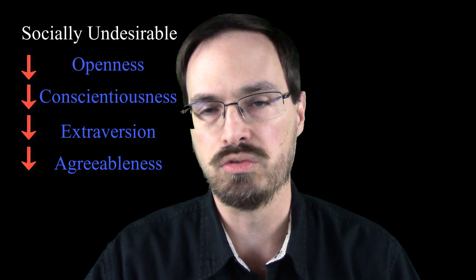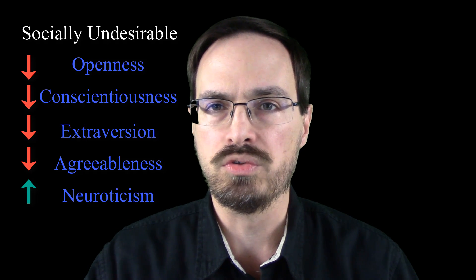The socially undesirable profile would be low scores in openness, conscientiousness, extroversion, and agreeableness, and a high score in neuroticism. A lot of the research literature really pays attention to that socially undesirable personality profile, and there's not a lot of attention given to extreme scores moving in the socially desirable direction. This is interesting because both the high and low poles of each trait are associated with difficulties, meaning mental health clinicians may be missing potential difficulties by ignoring certain scores.